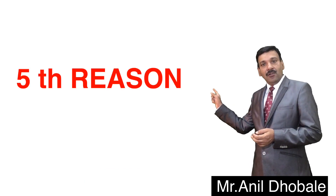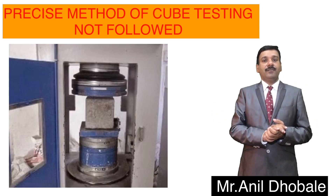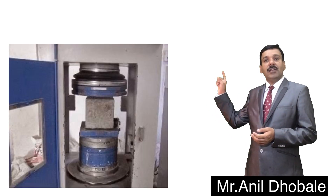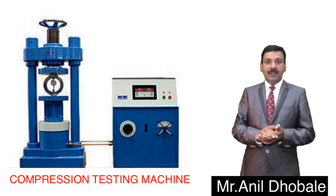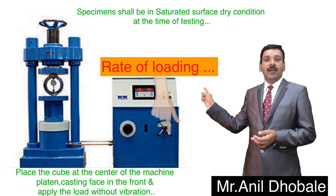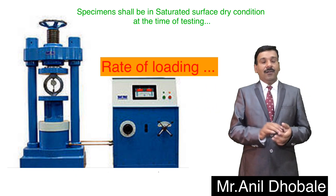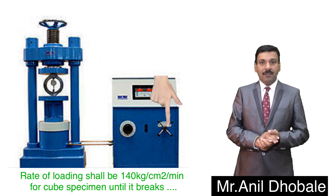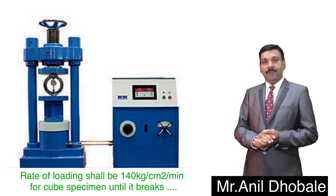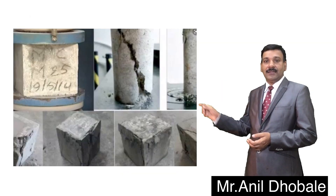Precise method of cube testing not followed. The cube shall be placed in a compression testing machine and load shall be applied without shock at a rate of 140 kg per cm² per minute until the specimen breaks.